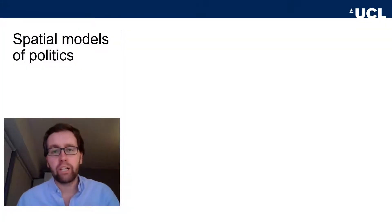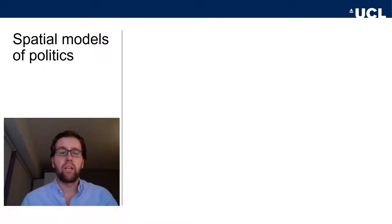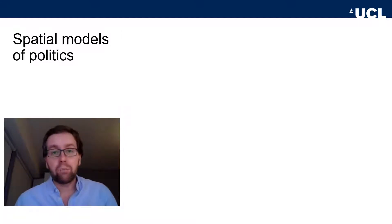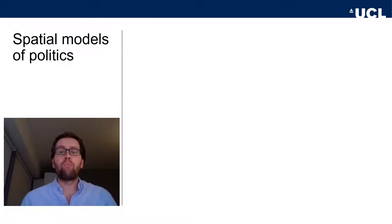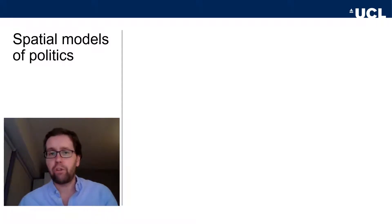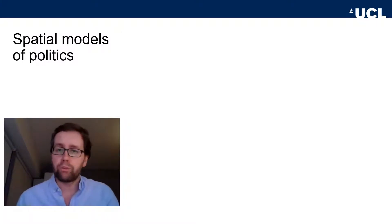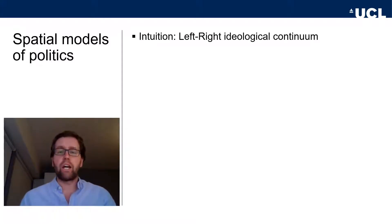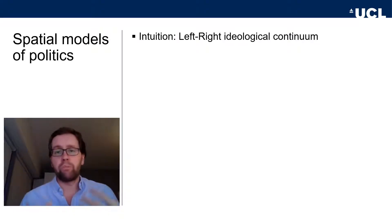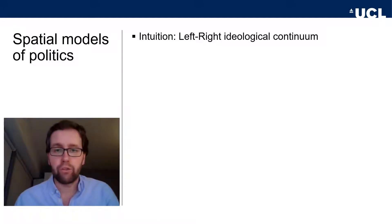Welcome to the second week of the political economy section of the EISPS core course. Today's topic is spatial models of politics. If I asked you to place yourself, political parties, or candidates on some sort of left-right continuum, most of you would know what I mean, and you'd have some implicit idea of what parties are to the left and to the right. It's curious that we use this spatial terminology to describe abstract ideological preferences about how society should be organized.